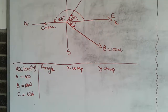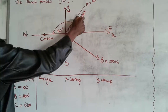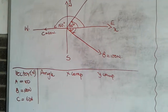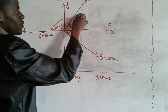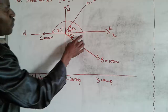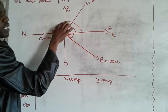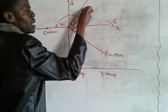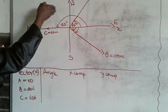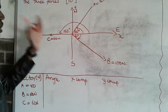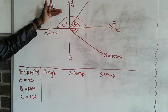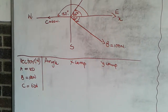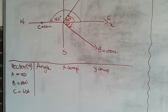Now we need to determine the angle for each vector. Know that the first quadrant spans 0 to 90 degrees, the second quadrant 90 to 180 degrees, the third quadrant 180 to 270 degrees, and the fourth quadrant 270 to 360 degrees. We pay attention to which quadrant each angle falls in.